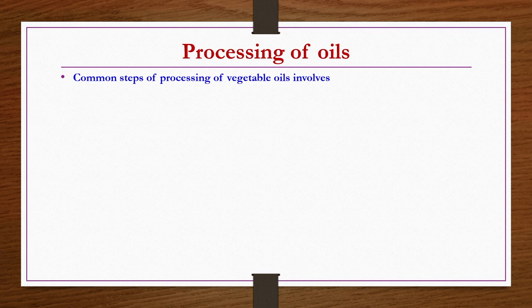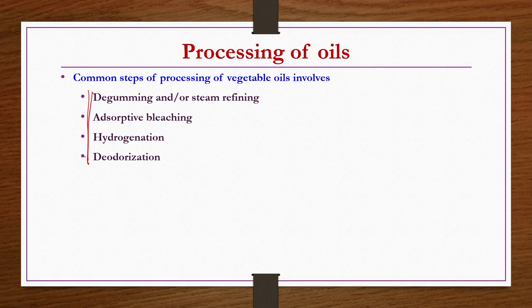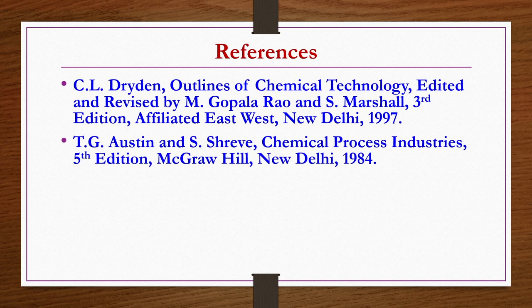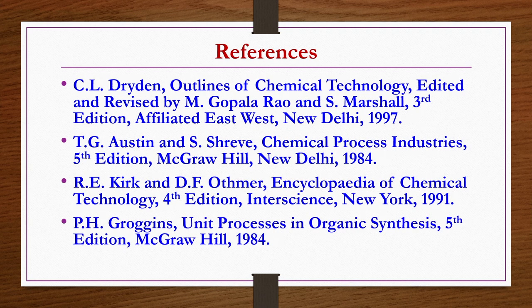That concludes the extraction of vegetable oils. Next is the processing of oils. The important common steps of processing vegetable oils include de-gumming and/or steam refining, adsorptive bleaching, hydrogenation, and deodorization. Details of each of these steps will be discussed in the next lecture. References for today's lecture include: Outlines of Chemical Technology by Dryden (3rd edition), Chemical Process Industries by Austin and Shreev (5th edition), Encyclopedia of Chemical Technology by Kirk and Atmar (4th edition), and Unit Processes in Organic Synthesis by Groginz (5th edition).